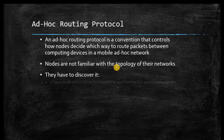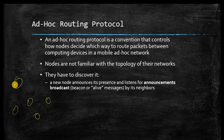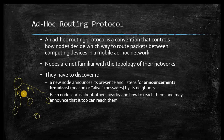Because nodes are not familiar with the MANET topology, they have to discover paths. A new node announces its presence and listens for announcements from neighbors via broadcast. It announces its routing information to all neighbors within range, and similarly other neighbors exchange information. Every node has to discover its own path since there is no access point or central router. Each node learns about nearby nodes and how to reach them, and may announce that it too can reach them.